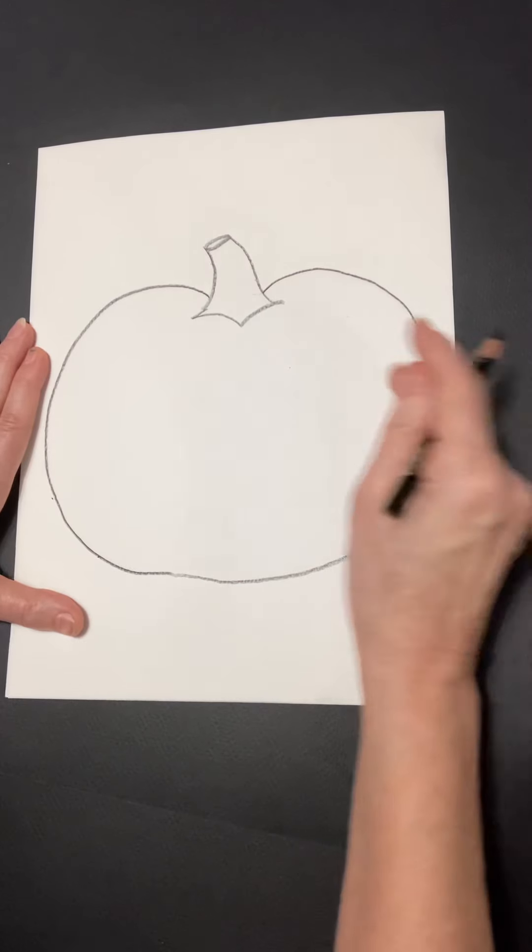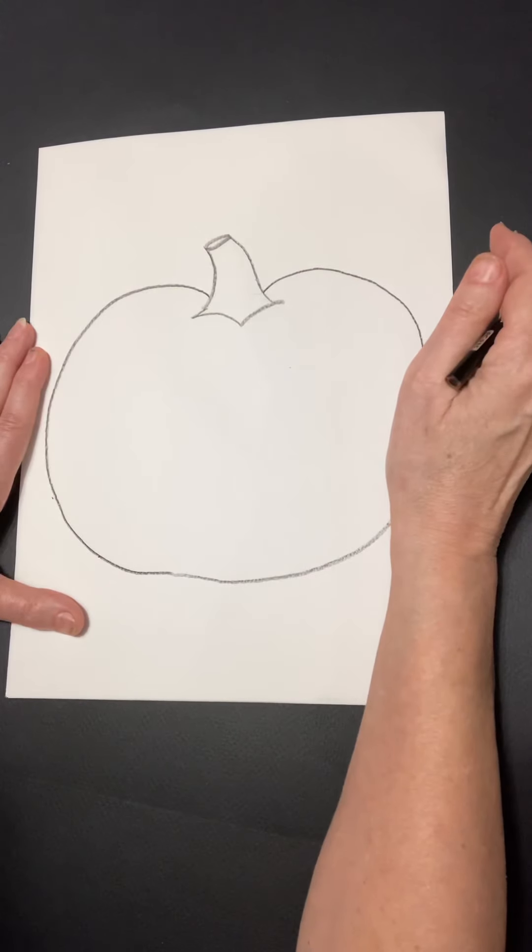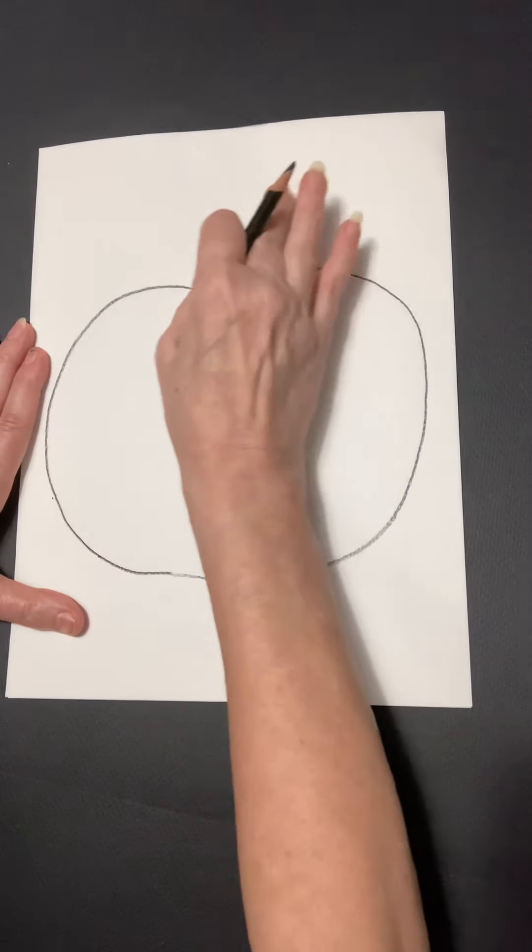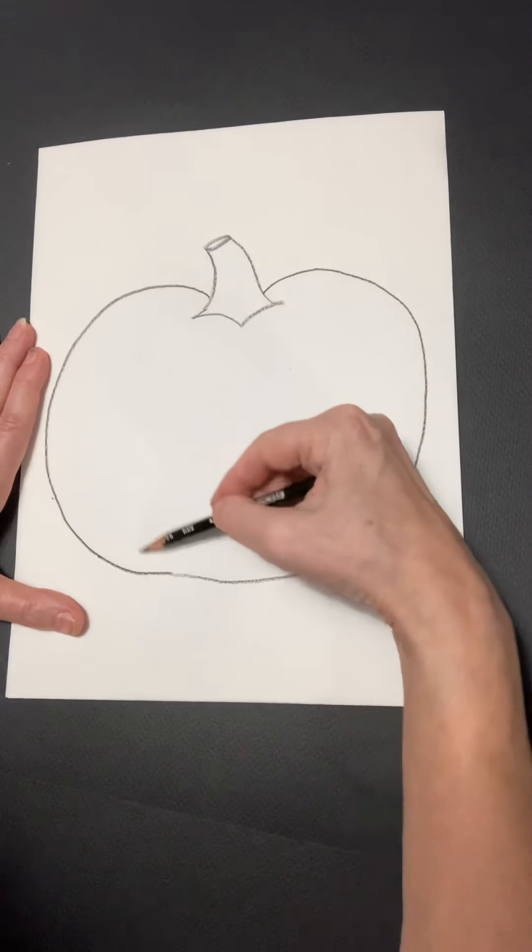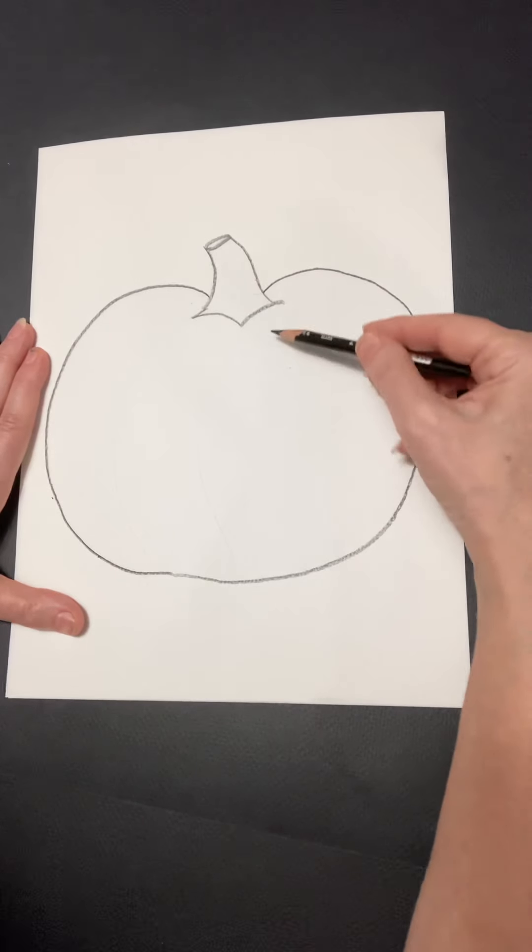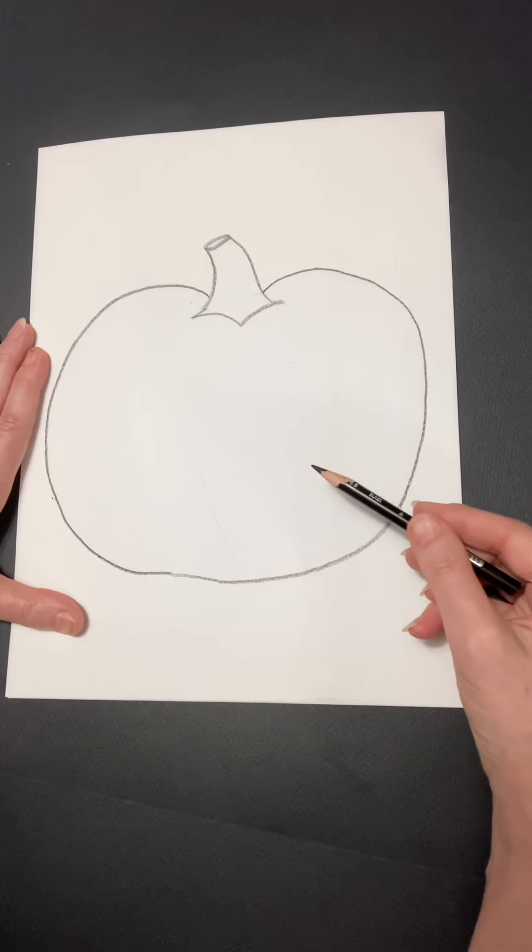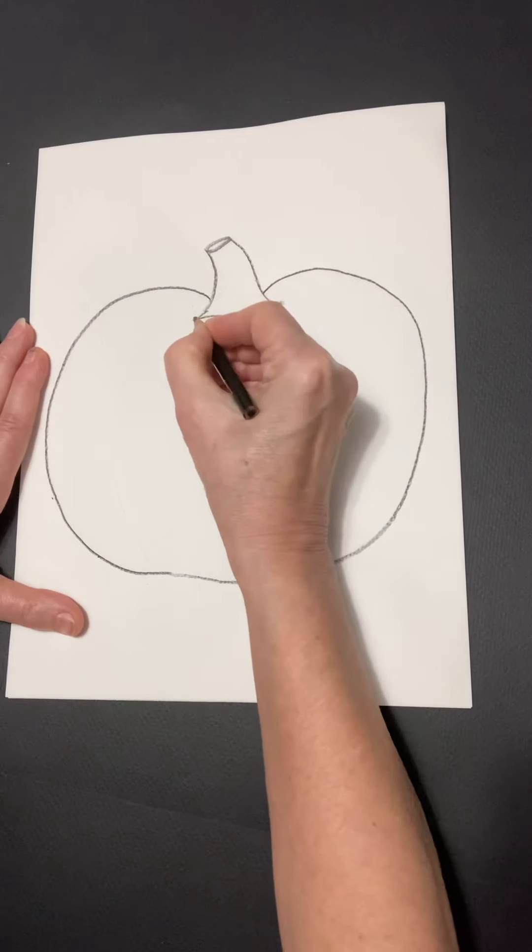Now our lines that show the curves on it kind of remind me of the lines on a basketball or the lines on a beach ball. They curve around on the left side, they curve like a letter C and on the right side, they curve like a backwards letter C. So let's give that a try.